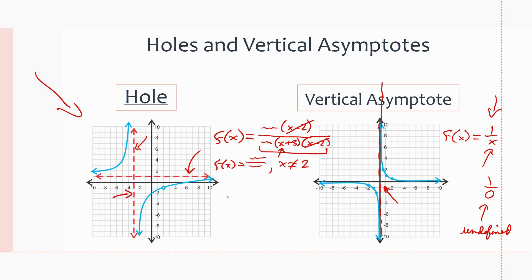We can also see a horizontal asymptote along the line y = 0. This is because there is no possible x value that makes f(x) = 1/x equal to zero — no matter what x value you plug in, you will never get zero. Therefore, there is a horizontal asymptote at y = 0, because it will never be possible.